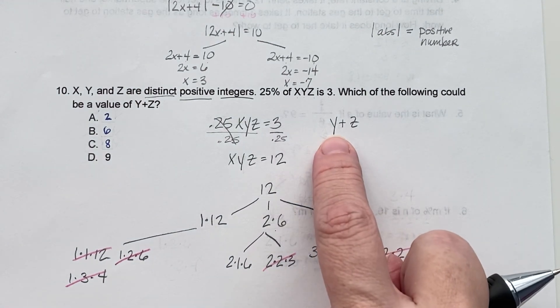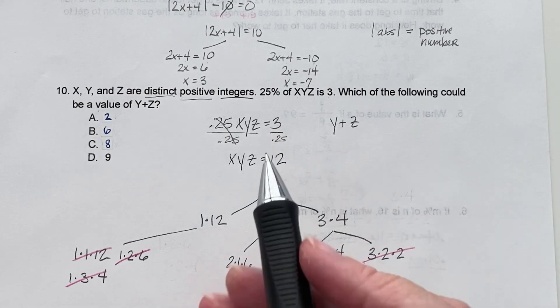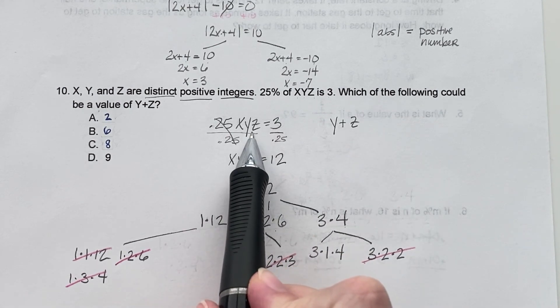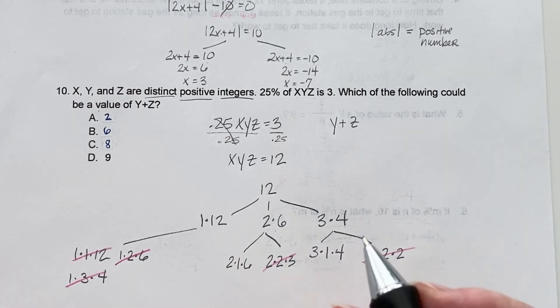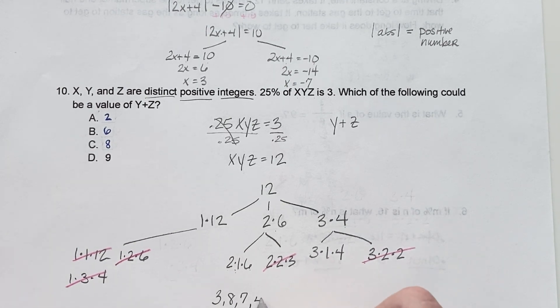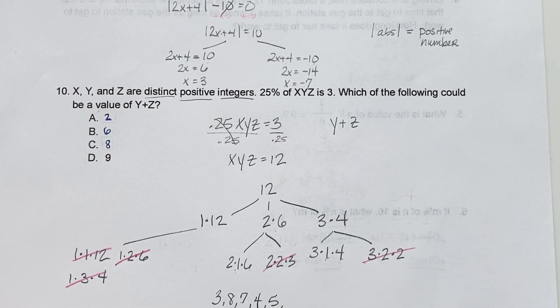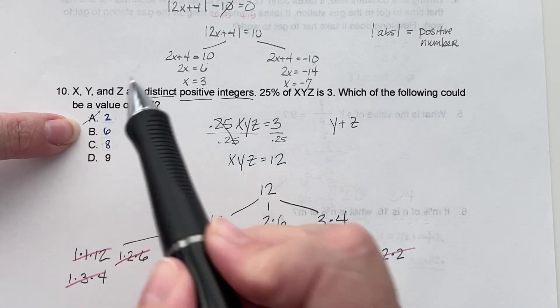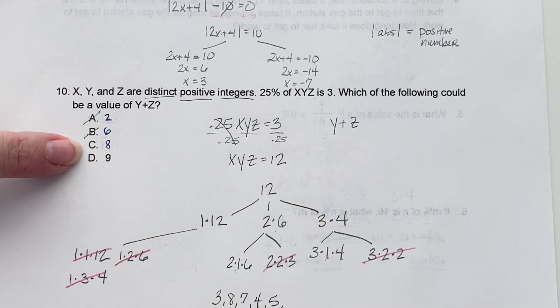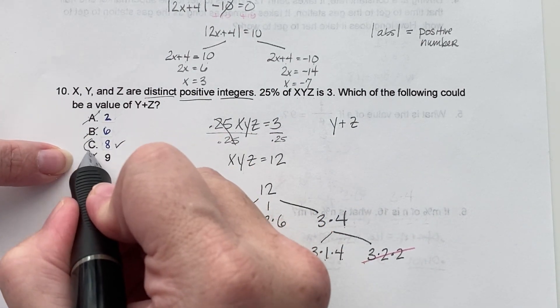Alright, so what is a possibility of getting y plus z? Now, it didn't tell us that these are in any specific order. So let's just start here. Well, 2 plus 1 is 3, 2 plus 6 is 8, 1 plus 6 is 7, 3 plus 1 is 4, 1 plus 4 is 5, and 4 plus 3 is 7, which we already have. Alright, so now let's look at all of these possibilities and see which one lines up here. Do we have a 2? No. Do we have a 6? No. Do we have 8? Yes. And do we have a 9? No. So automatically, our answer is C.